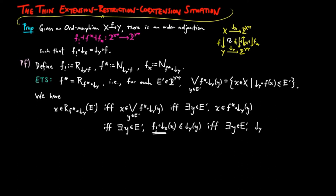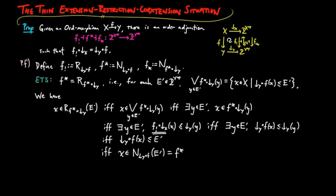This holds if and only if there exists a y in e-prime such that the lower segment on y of f(x) is less than or equal to the lower segment on y of y — since f lower shriek of the lower segment on x equals the lower segment on y composed with f — and this is true if and only if the lower segment on y of f(x) is less than or equal to e-prime, if and only if x is an element in the nerve induced by the lower segment on y composed with f on e-prime, which is the definition of the f-restriction on e-prime, completing the proof.